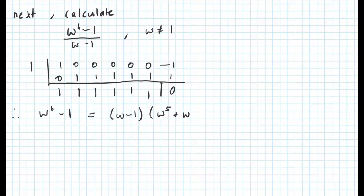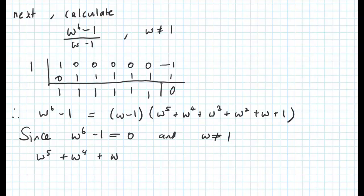The quotient in this case is w to the power of 5 plus w to the power of 4, etc., plus 1. Because w to the power of 6 minus 1 is 0, and w is not equal to 1, this must imply that the quotient w to the power of 5 plus w to the power of 4, etc., must equal 0, hence proving our property algebraically.